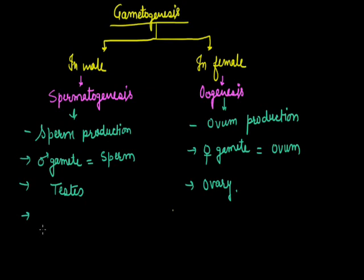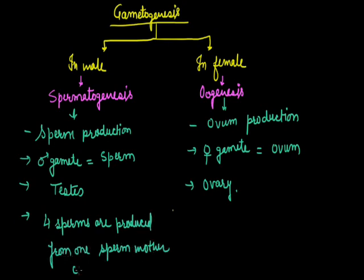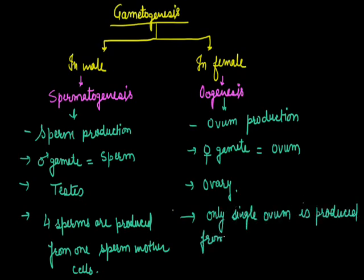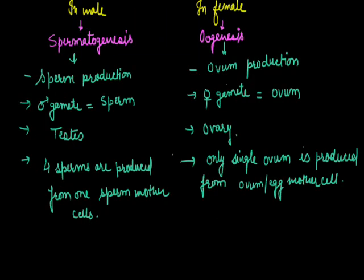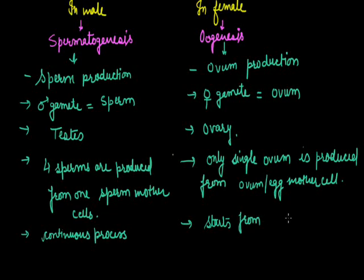From one sperm mother cell, four sperms are produced. While in the case of oogenesis, only a single ovum is produced from one ovum mother cell. Spermatogenesis is a regular process in males, it is a continuous process. While oogenesis takes place for a limited period. It starts from the age of puberty in females, which is 12 to 14 years, and stops at the time of 45 to 50 years of age.